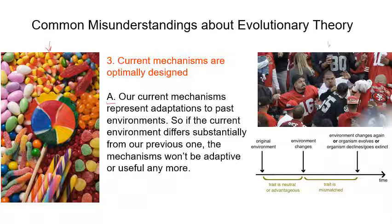Aggression is another example of environmental mismatch. In our evolutionary past, it might have been beneficial to be aggressive — it could gain resources and opportunities for reproduction. Whereas in our modern environment, aggression is morally frowned upon and acts of aggression typically have the opposite effect. We evolved the mechanisms for aggression in an environment where it was beneficial, and we continue to be aggressive even now in an environment where it is detrimental.